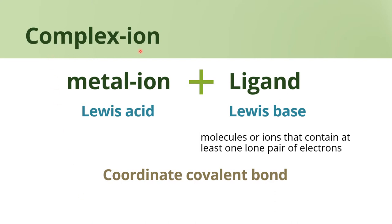The complex ion is the combination of a metal ion plus ligand. The interaction between these two is the Lewis acid-base interaction, where the metal ion is considered a Lewis acid and the ligand is considered a Lewis base. Lewis acid is the one that accepts an electron pair, and the Lewis base is the one that donates an electron pair. So a Lewis base, or ligand, can be any molecule or ion that contains at least one lone pair of electrons.